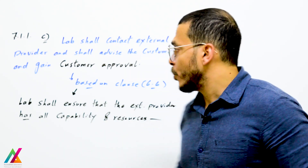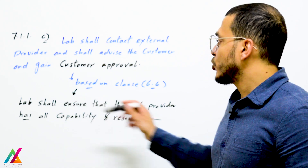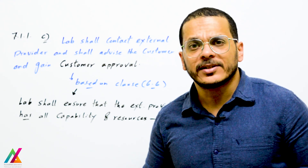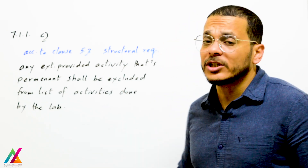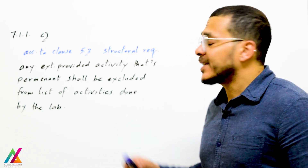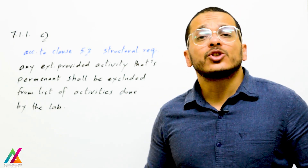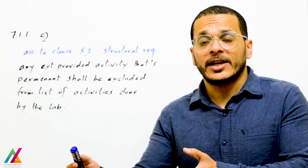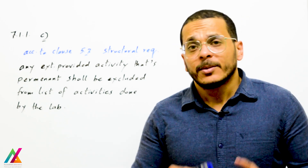Based on clause 6.6 on external provided products and services, the lab shall ensure the external provider has all the capability and resources to meet customer requirements. This subcontract shall be temporary, not permanent, because according to clause 5.3 on structural requirements, any external provided activity that is permanent shall be excluded from the list of activities performed by the lab. If you know you will never be able to perform an activity, you shall make a permanent subcontract but will no longer be responsible for that activity.